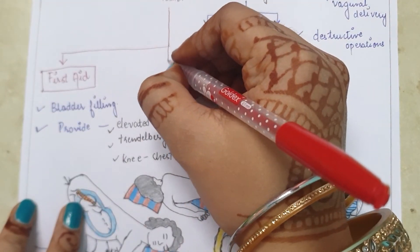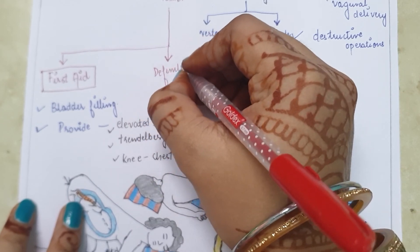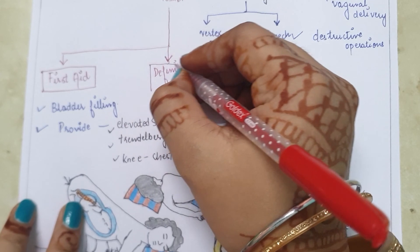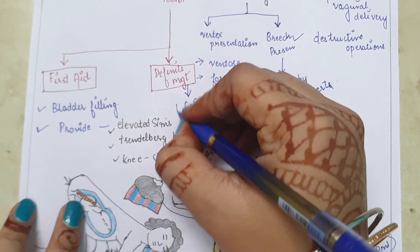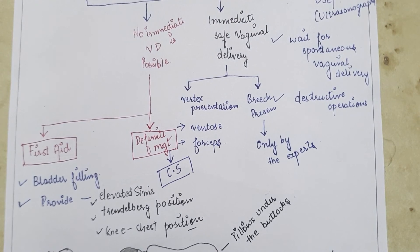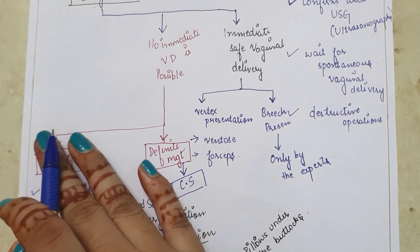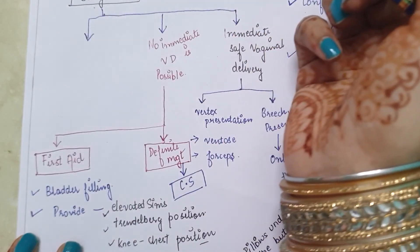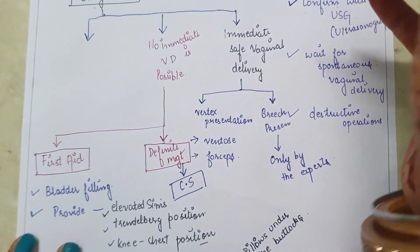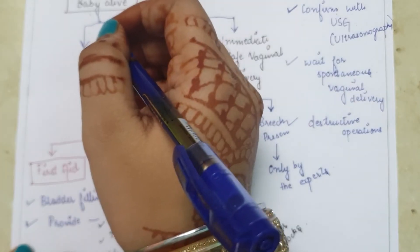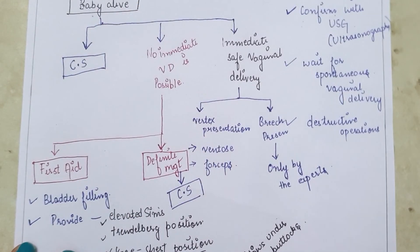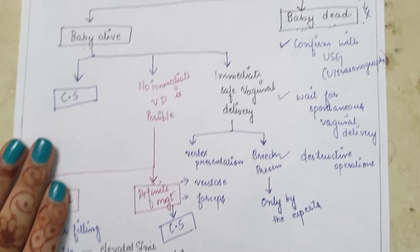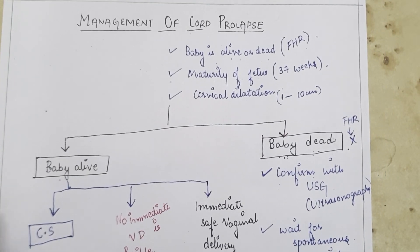Under definitive management, if none of the first aid measures are working, then immediate cesarean section should be done. If the baby is alive and there are no chances of safe vaginal delivery — neither now nor later — then cesarean section is the best option. This is the management of cord prolapse.